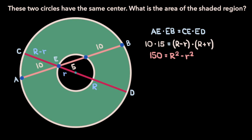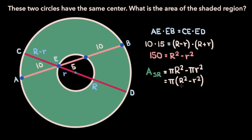So we have the equation 150 = R² − r². But how does this help us find the area of the shaded region? The area of the shaded region is nothing but the area of the outer circle, π·R², minus the area of the inner circle, π·r². If we factor out π, we get the area of the shaded region equals π times (R² − r²). Recall that we found R² − r² = 150, so the area of the shaded region is π times 150, which is 150π.